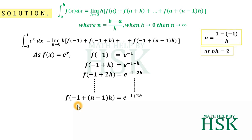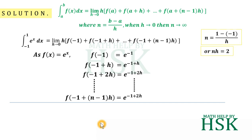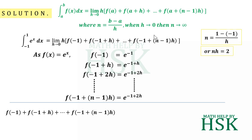The last term, f of minus 1 plus n minus 1 into h, would be equal to e to the power of minus 1 plus n minus 1 times h. To solve this question it is very necessary to calculate the sum. I have written all these terms in a systematic manner and I am going to total them. The left hand side is f of minus 1 plus f of minus 1 plus h, and so on up to f of minus 1 plus n minus 1 into h.